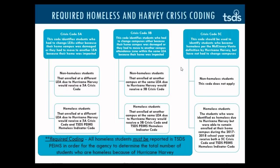Going to the right-hand column of the chart, 5C is a little different. Crisis Code 5C should be used to identify students who became homeless per the McKinney-Vento definition due to Hurricane Harvey but have not had to change campuses. In this situation, non-homeless students do not apply and do not use Crisis Code 5C. Homeless students who were identified as homeless due to Hurricane Harvey but were able to remain enrolled at their home campus during the 2017-2018 school year would receive both the 5C Crisis Code and must also receive the TSDS PIMS homeless indicator code. All homeless students must have the appropriate Crisis Code 5A, 5B, or 5C in conjunction with the appropriate TSDS PIMS homeless indicator code.